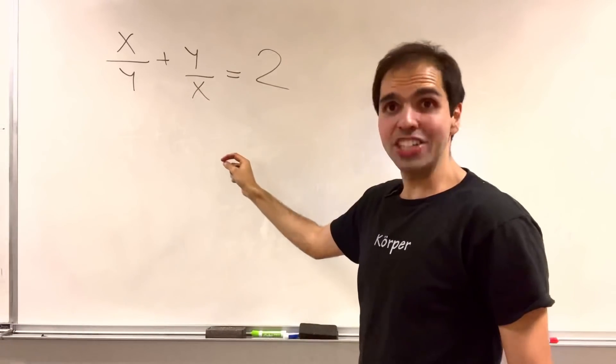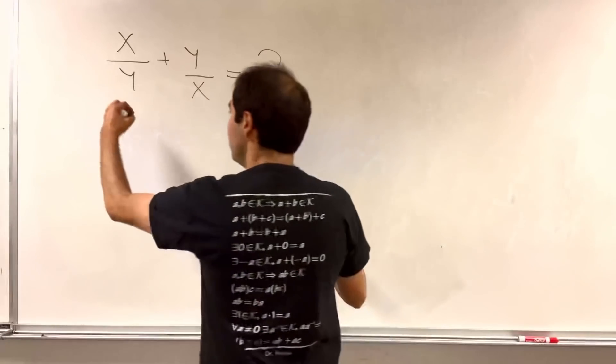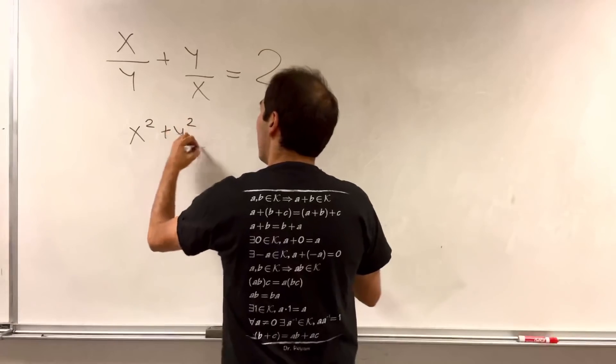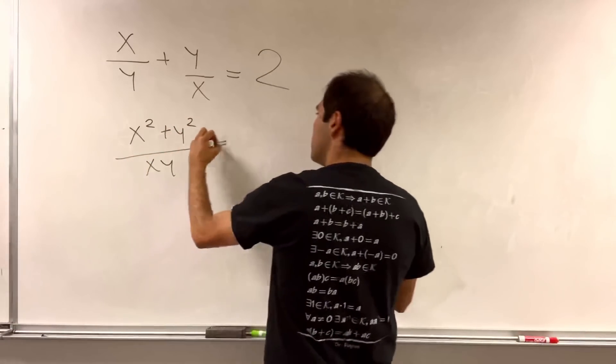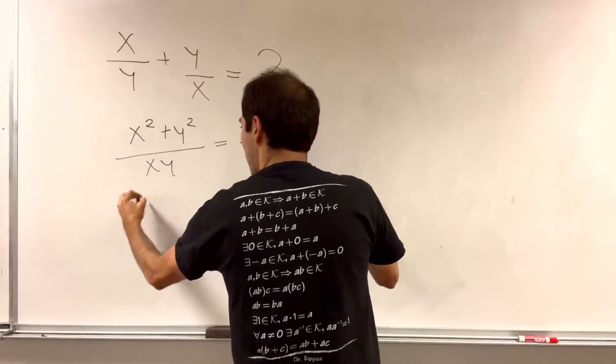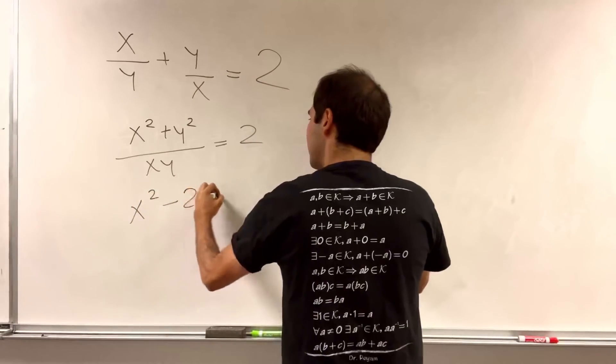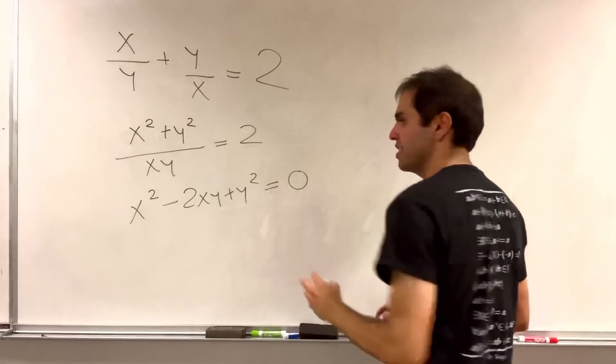Because here we have x squared plus y squared over xy equals 2. So, x squared minus 2xy plus y squared equals 0.